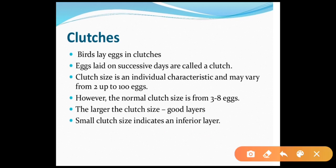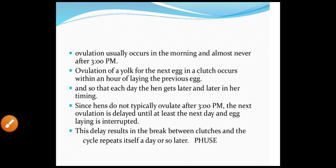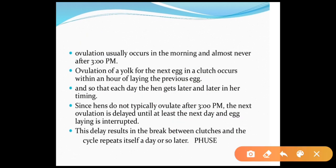Clutches: eggs laid on successive days are called a clutch. Clutch size is an individual characteristic and may vary from 2 to 1,000 eggs. The normal clutch size is 3 to 8 eggs. Larger clutch size indicates a good layer; a small clutch size indicates an inferior layer.